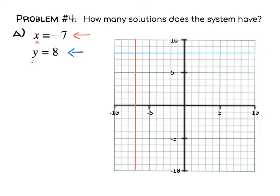They're not asking for what the solution is, but I'm just going to point it out to you. The solution is right there, because that's where they cross. And of course, you know that since this is perfectly vertical and this is perfectly horizontal, they can't have the same slope, so they're definitely going to meet and they're definitely not the same line.